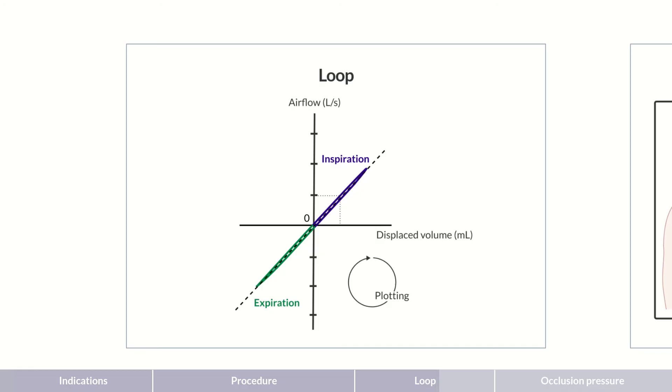The gradient of the curve corresponds to the specific airway resistance, that is, the bronchial resistance that needs to be overcome by airflow during breathing. The flatter the loop, the greater the airway resistance.